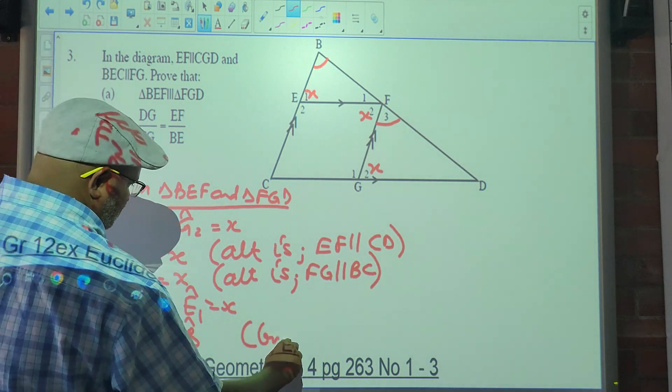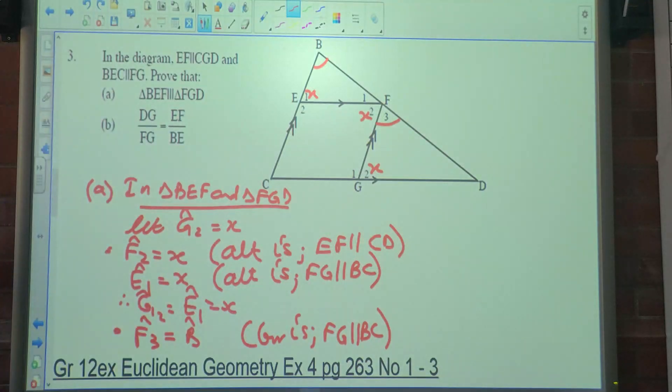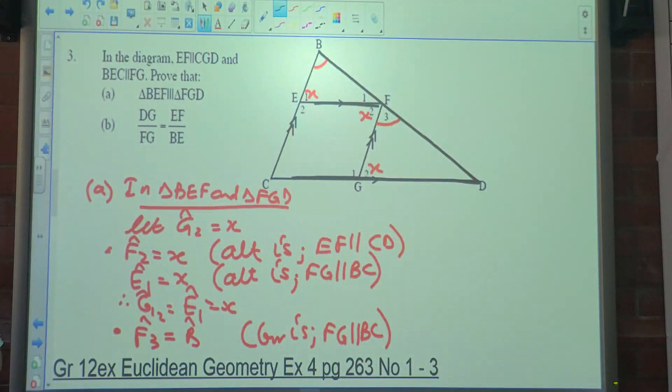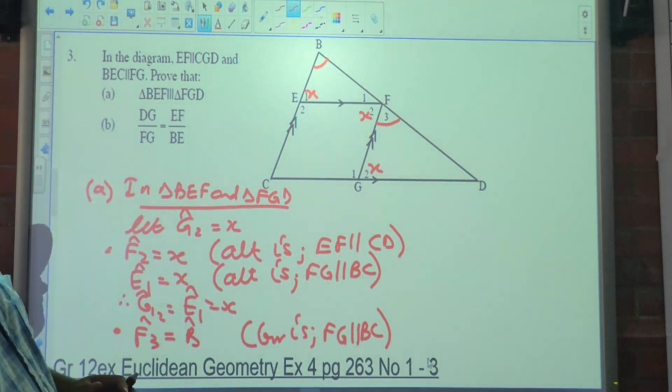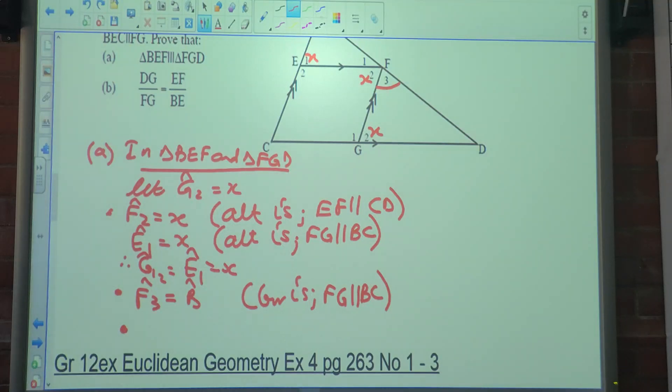E1 is equal to X. Why? Alternate angles with FG being parallel to BEC. So therefore, we've got the first angle which is G2 is equal to angle E1. There we have the first one. F3 is equal to angle B, corresponding angles with FG being parallel to BEC. And then of course the third one is F1 is equal to D. What is that? Corresponding. So what do we say? Angle F1 is equal to angle D. Why? It's the third angle in the sum. Is that enough to conclude similarity again? Yes. So therefore, triangle BEF is similar to triangle FGD. Why? Angle, angle, angle.